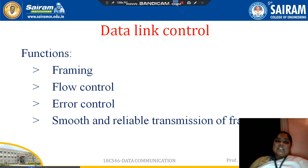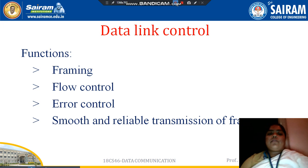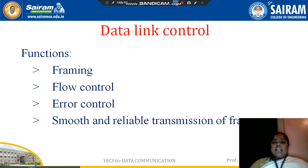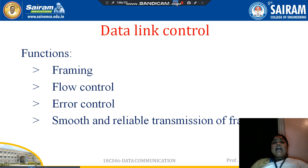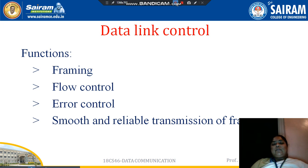The data link layer takes whatever message the sender has — whether it is text, audio, or video — and converts it into frames. A frame is nothing but the given data divided into manageable units. The sender divides the data into small units that can be managed at the receiver side. Each piece of data is considered as a small number of bits, manageable at the receiver side.